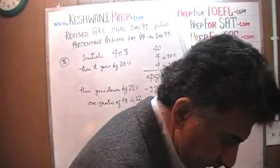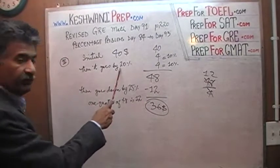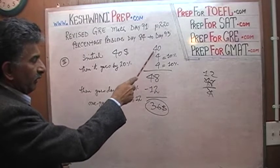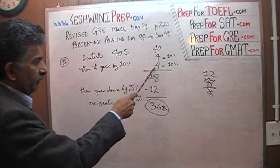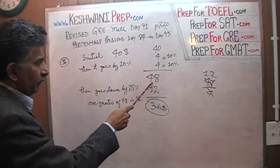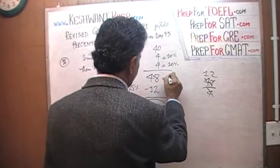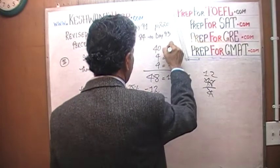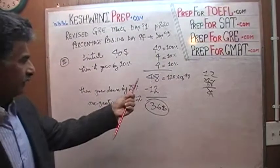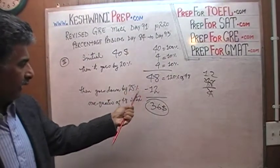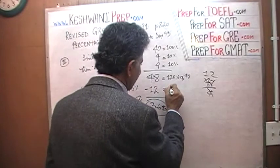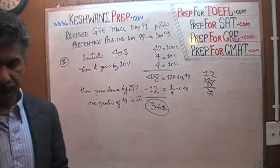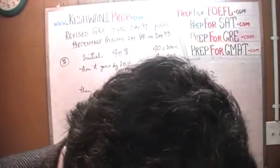So it ends up with $36. First it goes up by 20% — we figured it out by taking 10% and 10%: 10% of 40 is 4, and another 10% of 40 is another 4. So 4 plus 4 plus 40 is 48, and this represents 120% of the original $40. Then this new amount goes down by 25%, so this 12 is actually one quarter of 48. We end up with $36. Let's do one more.